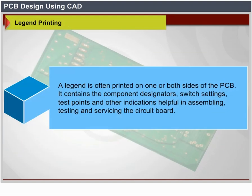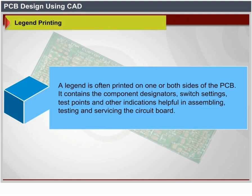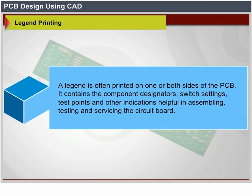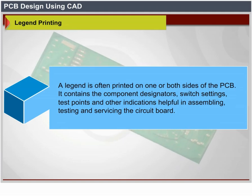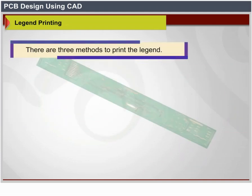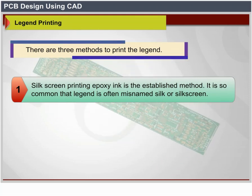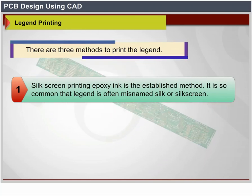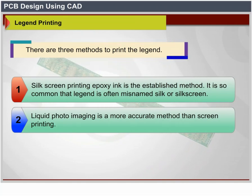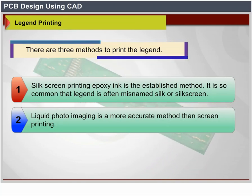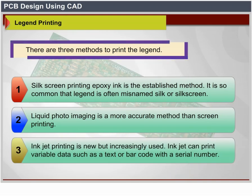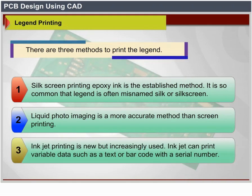Legend Printing: a legend is often printed on one or both sides of the PCB. It contains the component designators, switch settings, test points, and other indications helpful in assembling, testing, and servicing the circuit board. There are three methods to print the legend: silk screen printing (epoxy ink — so common that legend is often called 'silk' or 'silkscreen'), liquid photo-imaging (more accurate than screen printing), and inkjet printing (new but increasingly used; can print variable data such as text or barcodes with serial numbers).